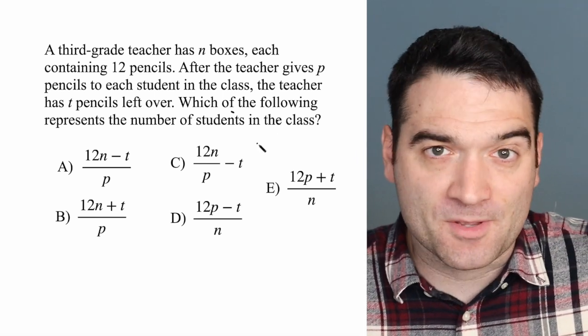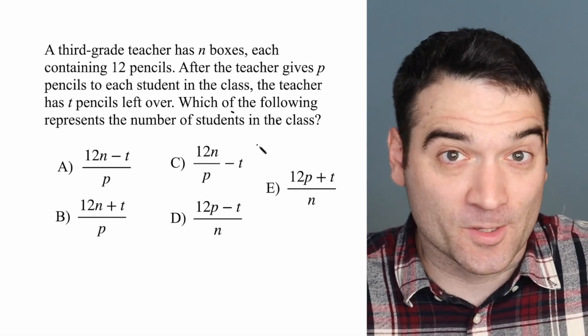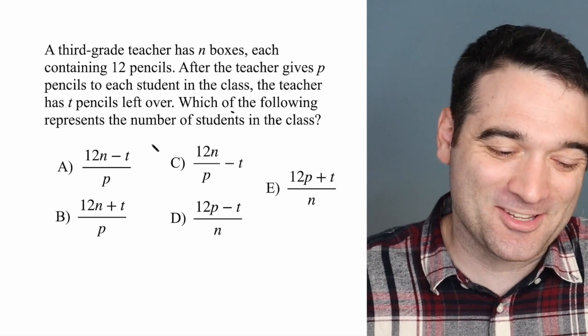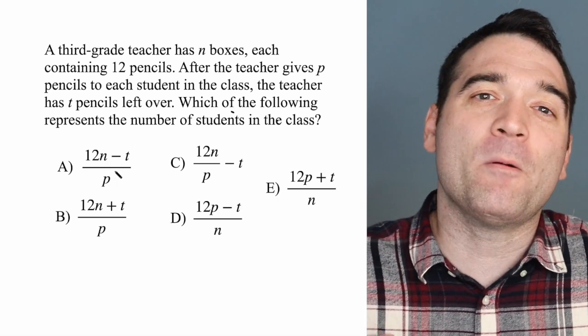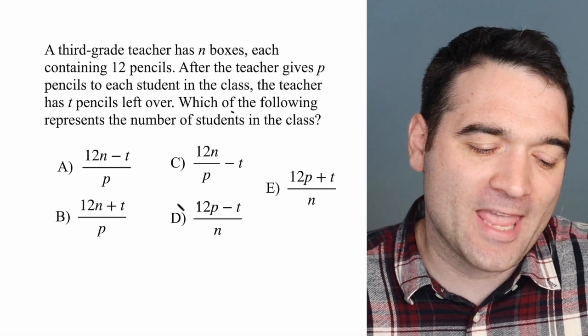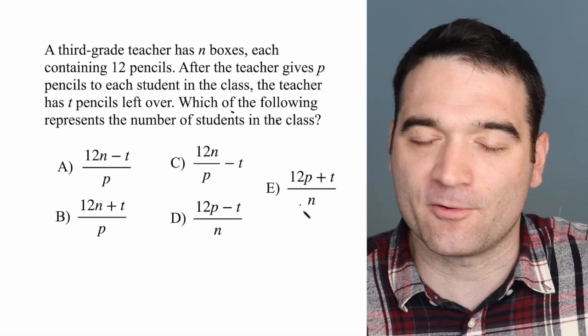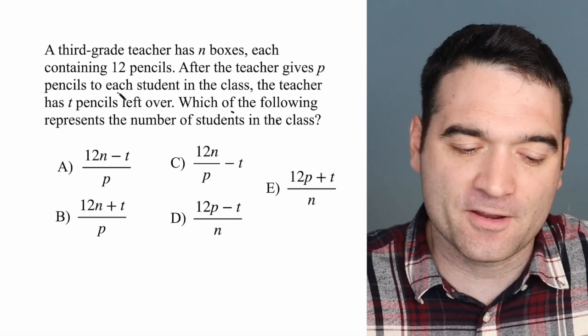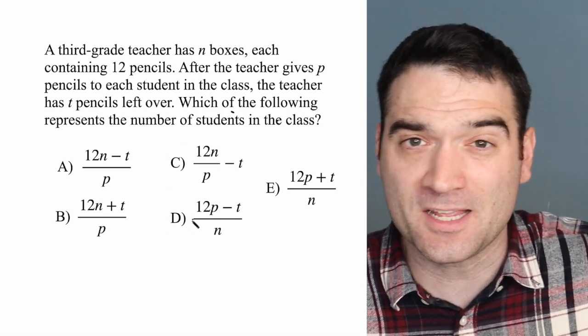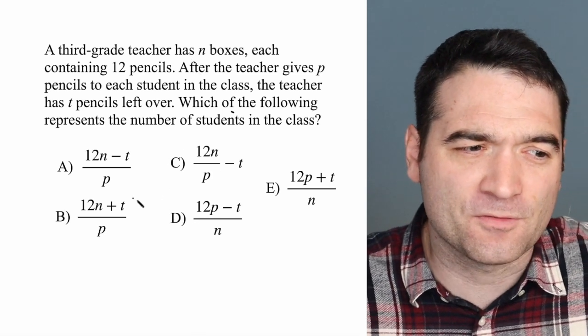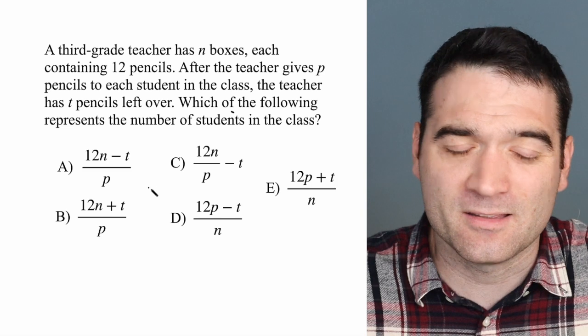All right, well, you might have noticed something about this problem. It's really hard, right? It's not just you. This is a tough problem. And what makes it so tough is the fact that we have these variables floating around the answer options. We have variables in the question here, and then we have variables in the answer options. And so the problem is very vague. It's undefined.